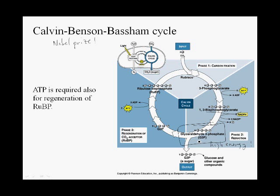Two molecules of glyceraldehyde 3-phosphate can spontaneously — meaning it's downhill in terms of free energy — combine to form a molecule of glucose 6-phosphate.